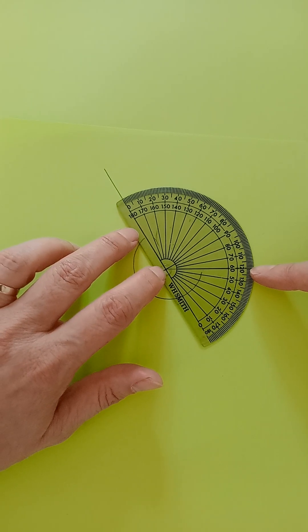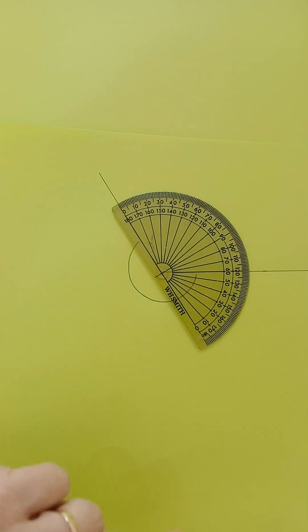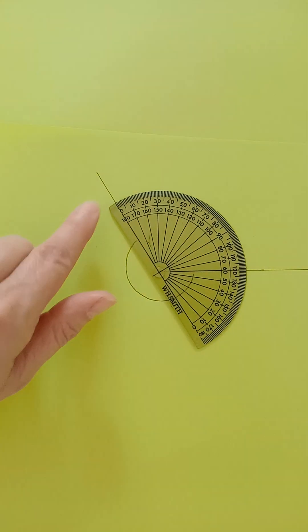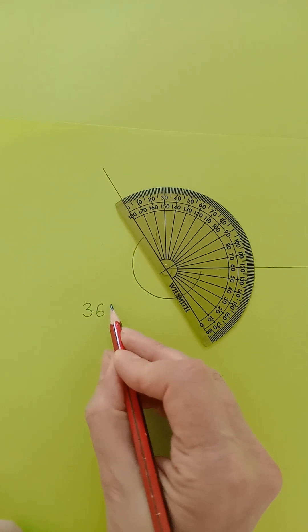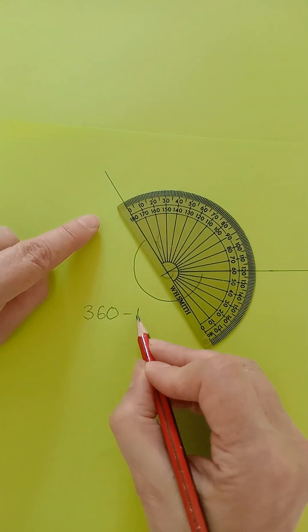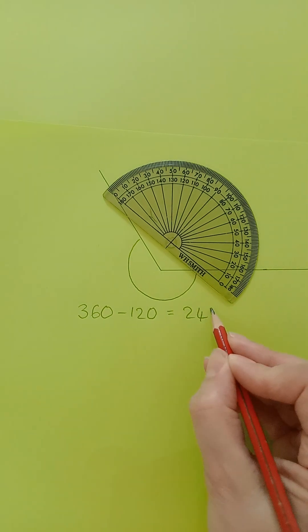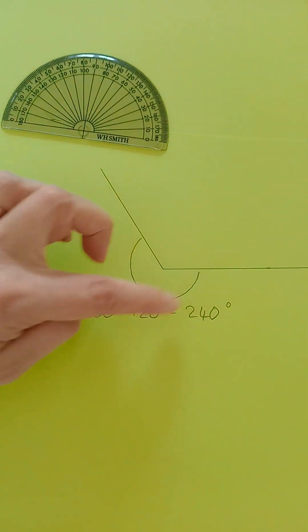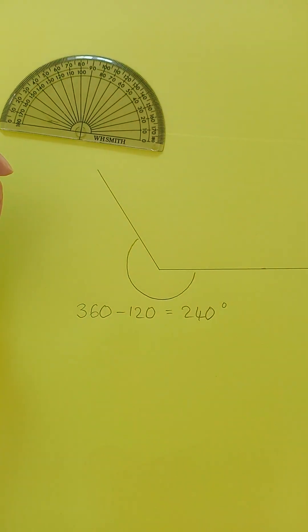So, we now remember that there are 360 degrees around a point. So, to find out the size of this reflex angle, we have to do 360 minus the 120 we've measured, and that equals the 240 that we measured with our circular protractor. I hope this helps.